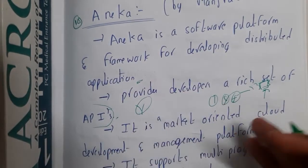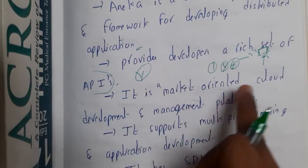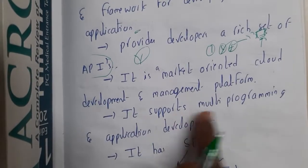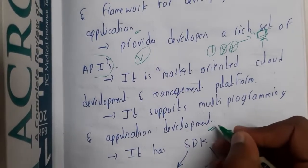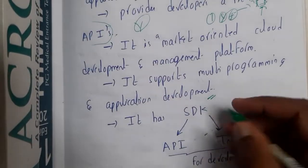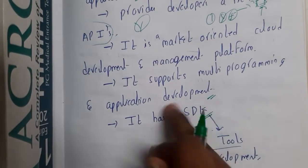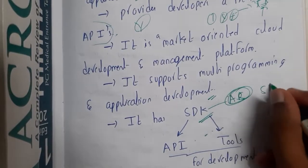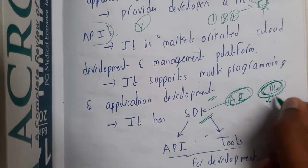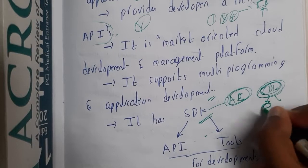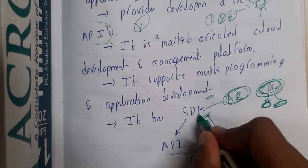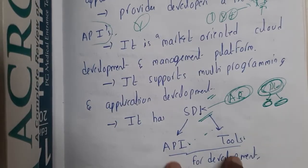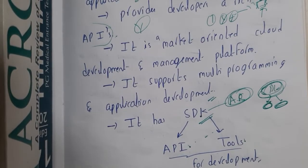These kinds of APIs are many available in Aneka, which is why it is a popular developing tool. It is a market-oriented cloud development and management platform. It supports multi-programming and application development. It internally has an SDK — similar to Android Studio, where we download SDKs and inside them we have APIs and tools. Here also, inside the SDKs we have the APIs and tools, and using these tools you can develop your application.